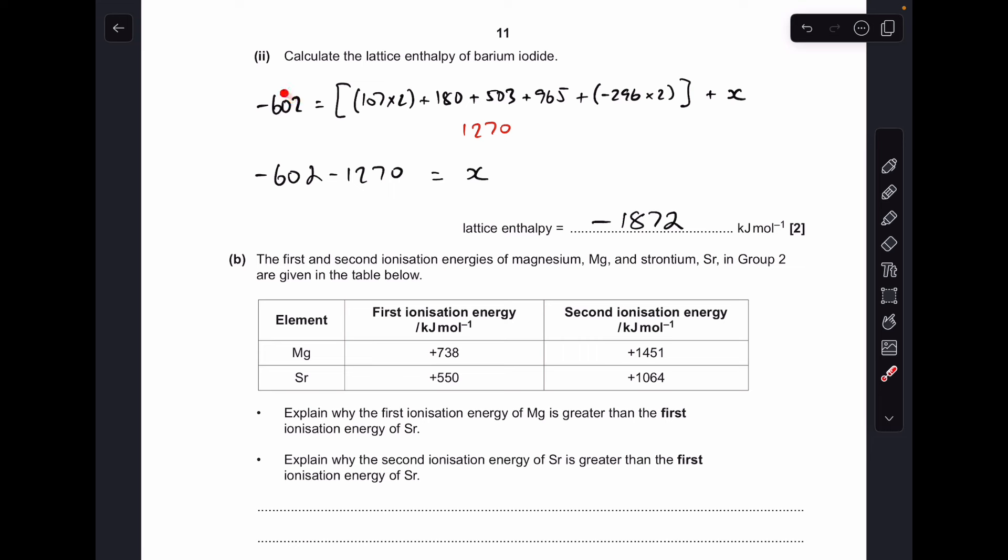So that's the enthalpy change of formation, and that's everything added together for the other route. Within the square bracket, we've got all the numbers, and that totals 1270. To solve for X, I'm going to take that over there and combine it with the -602, giving us -1872 kilojoules per mole.